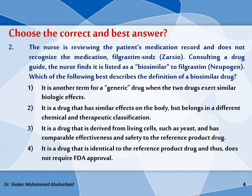Option 1: it is another form of a generic drug when two drugs have exact similar biologic effects. Option 2: it is a drug that has similar effects on the body but belongs to a different chemical and therapeutic classification. Option 3: it is a drug derived from living cells such as yeast and has comparable effectiveness and safety to the reference product. Option 4: it is a drug that is identical to the reference product and does not require FDA approval.